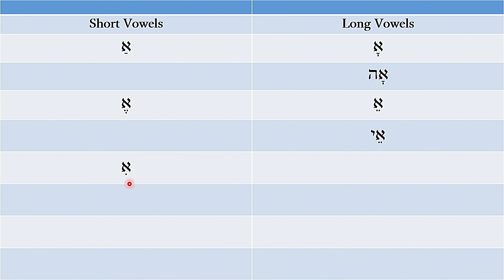Then we have the vowel hirik. This is simply one dot beneath the consonant, and it makes the sound 'e' like machine. You have one dot, it's called a hirik, and it makes the sound 'e' like machine. The corresponding long vowel is a full letter vowel because it appears with a consonant — you have a dot, which is a hirik, with a yod, which is a consonant. The two of them together make this vowel, and the sound that it makes is 'e', just like machine.